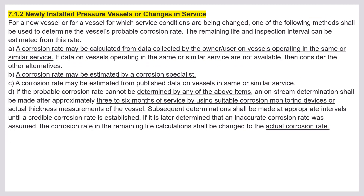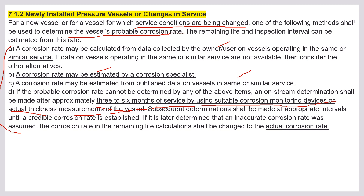For newly installed pressure vessels or vessels with a change in service, one of the following methods shall be used to determine the probable corrosion rate: the corrosion rate may be calculated from data collected by the owner/user; estimated by a corrosion specialist; or estimated from published data on vessels in the same or similar service. If the probable corrosion rate cannot be determined by any of the above, an on-stream determination shall be made within approximately three to six months of service using suitable corrosion monitoring devices or actual thickness measurements.